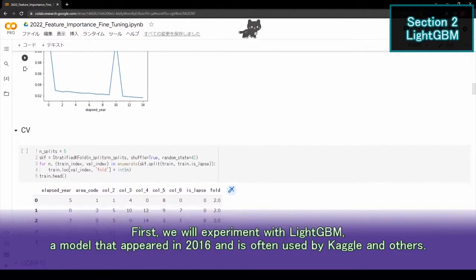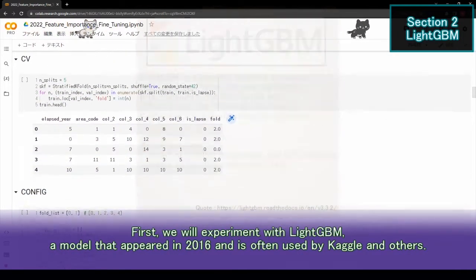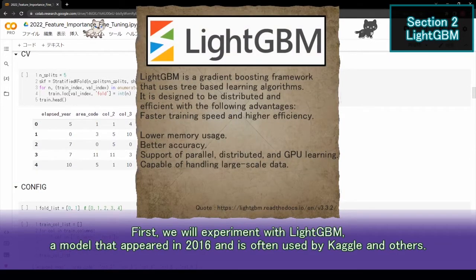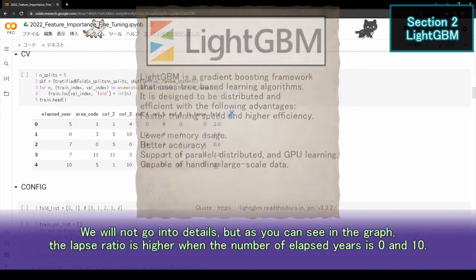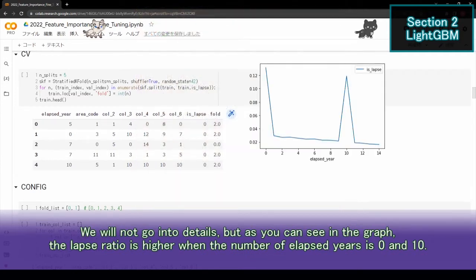First, we will experiment with LightGBM, a model that appeared in 2016 and is often used by Kaggle and others. In this case, we will use dummy data that mimic lapse. We will not go into details, but as you can see in the graph, the lapse ratio is higher when the number of elapsed years is 0 and 10.